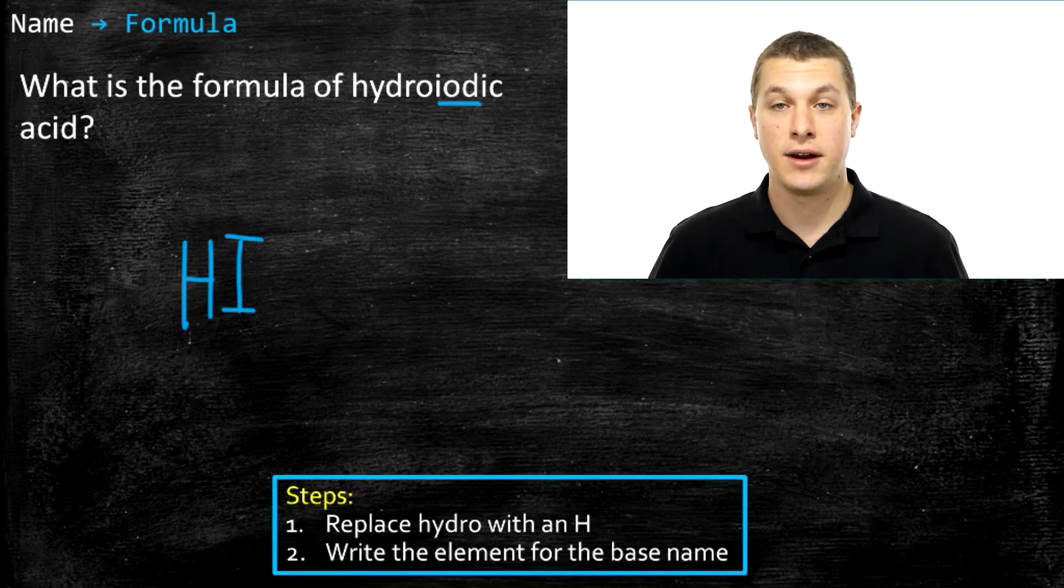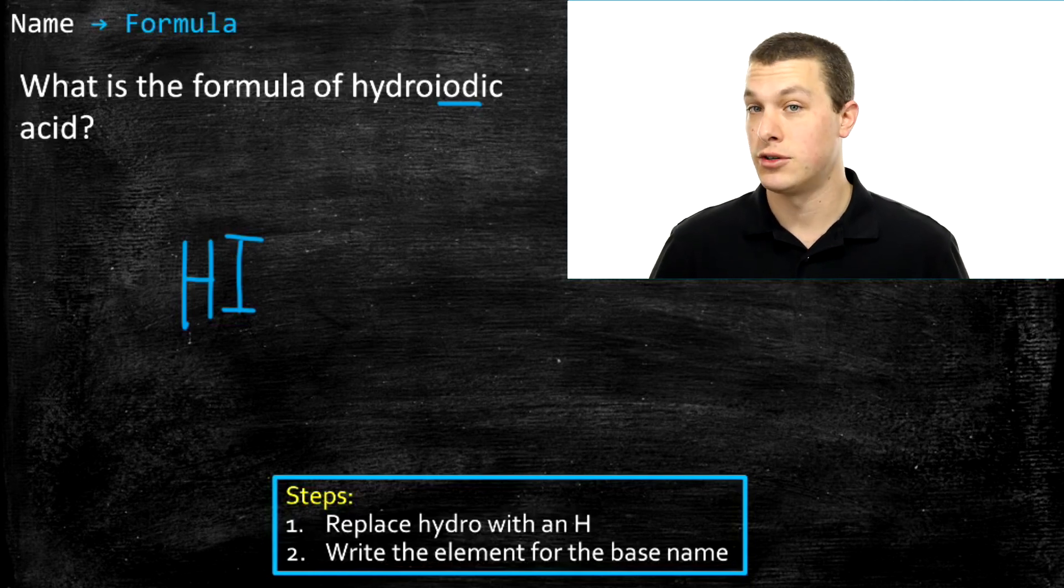It turns out there's just not very many of these binary acids. The ones we've gone through, hydrochloric, hydrobromic, hydrofluoric, and hydroiotic acids, are the four main ones you'll see.